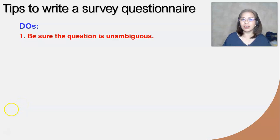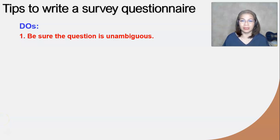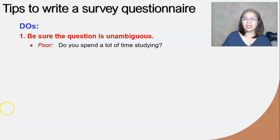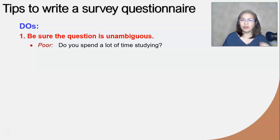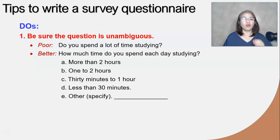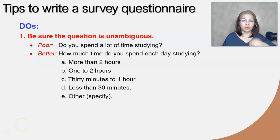Number one: be sure that the question is unambiguous. It should not elicit another interpretation for the respondents. For example, if you ask, 'Do you spend a lot of time studying?' — the respondents may wonder how much 'a lot of time' actually means. How do we correct this? Probably we can say, 'How much time do you spend each day studying?' and then provide choices for the respondents to tick the amount of time they spend studying each day.